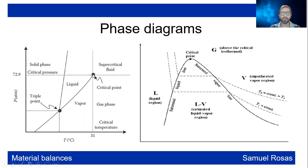Here you have the critical point, which we have already talked about. It is the maximum state where liquid and vapor can coexist. After that we have a supercritical fluid.